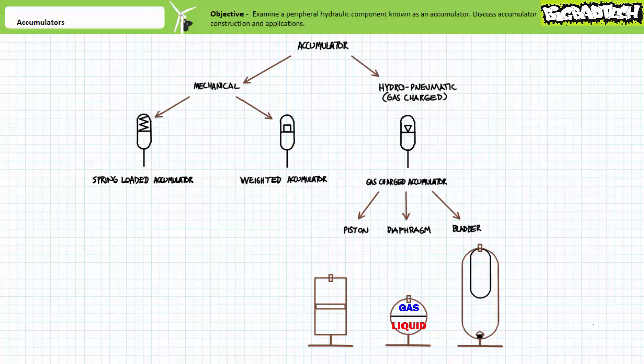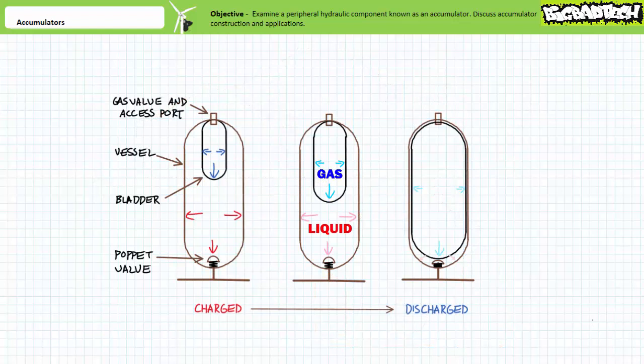Bladder-type accumulators use a strong synthetic rubber balloon to exert and absorb pressure. Bladder accumulators often include a poppet valve that closes when the accumulator is fully discharged of liquid, to prevent the bladder from extruding into the system. Additionally, bladder accumulators often include a top opening allowing a technician to remove and replace a damaged bladder after the system is locked and tagged out.